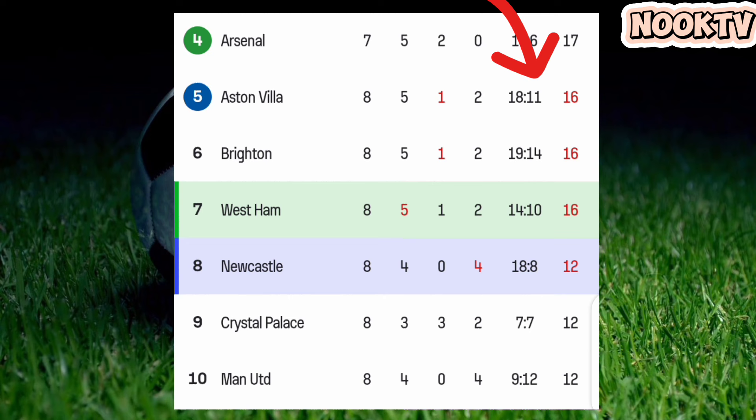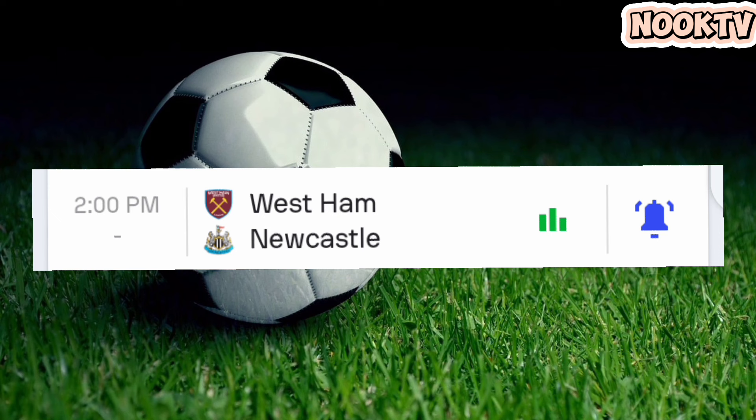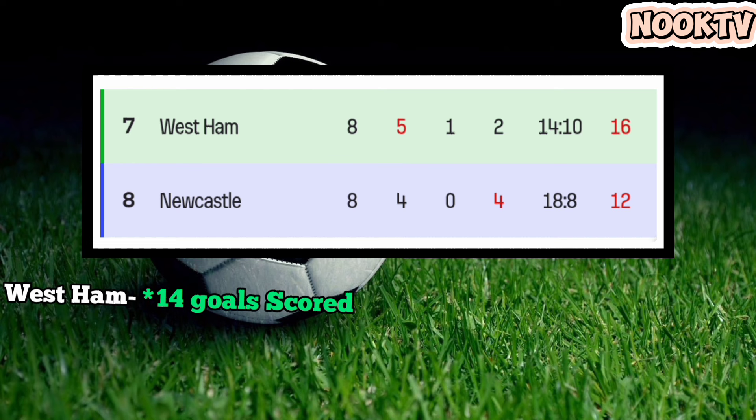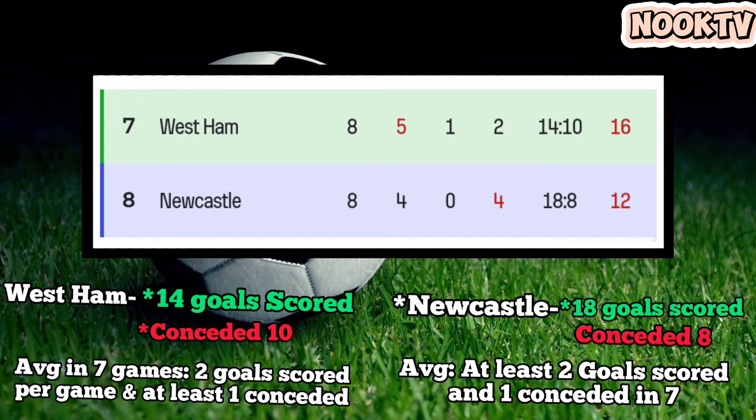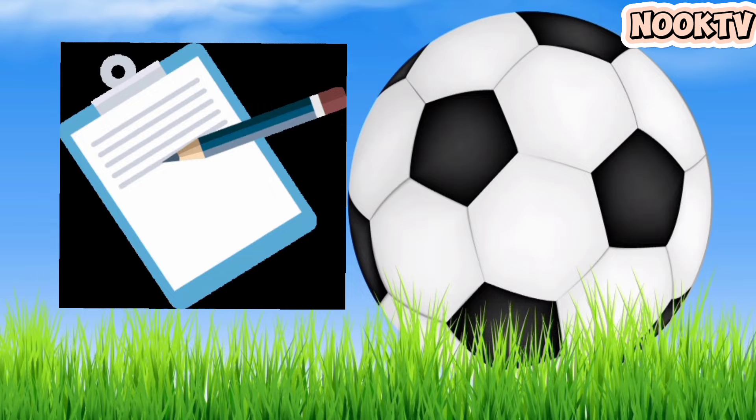Let's take the match between West Ham and Newcastle as an example. On the league table, we can see that West Ham scored 14 goals and conceded 10 in 7 games, averaging 2 goals scored per game while conceding at least 1 per game. Newcastle United had 18 goals scored and 8 conceded in 7 games, averaging more than 2 goals scored and conceding at least 1 per game. With this simple info, we can conclude that both teams have no problem scoring goals and can equally concede.